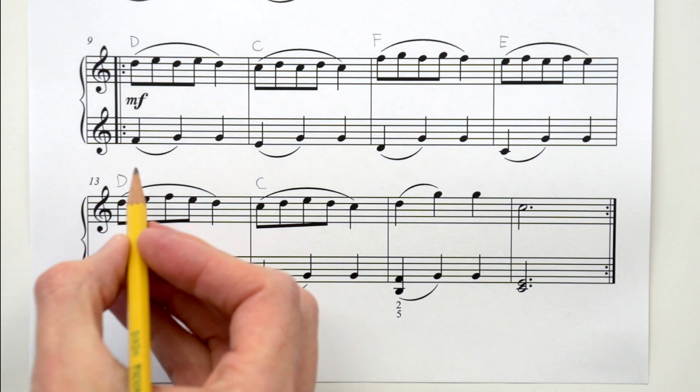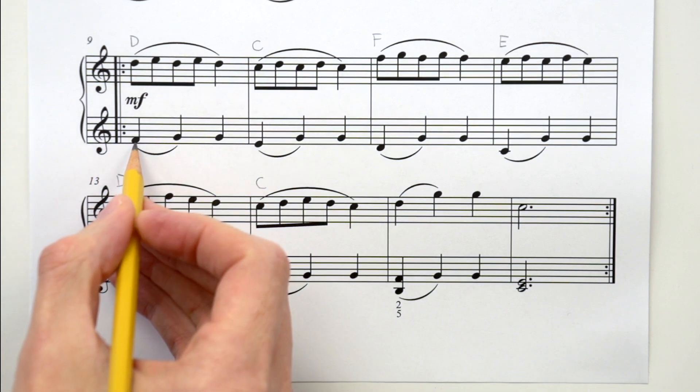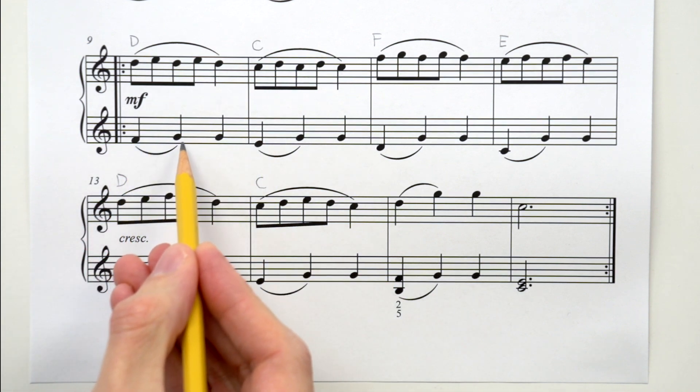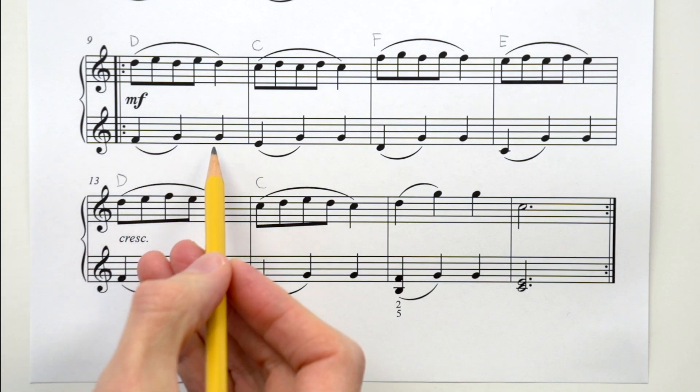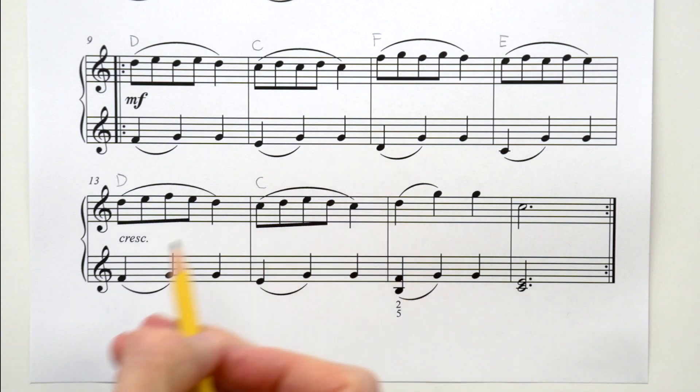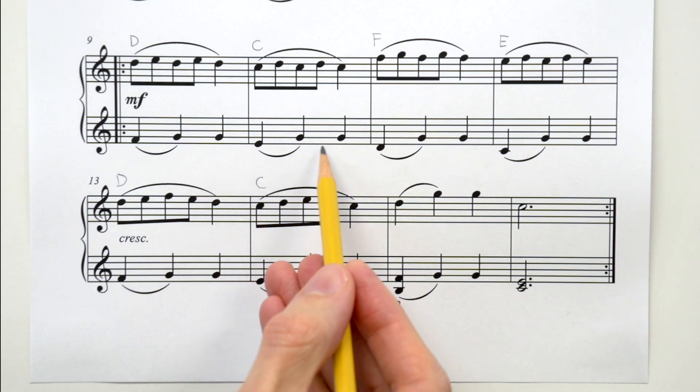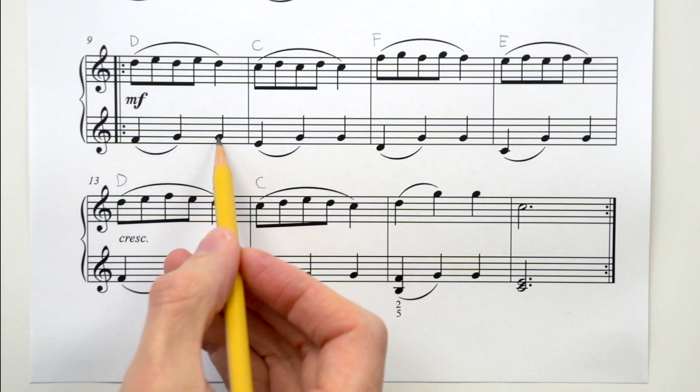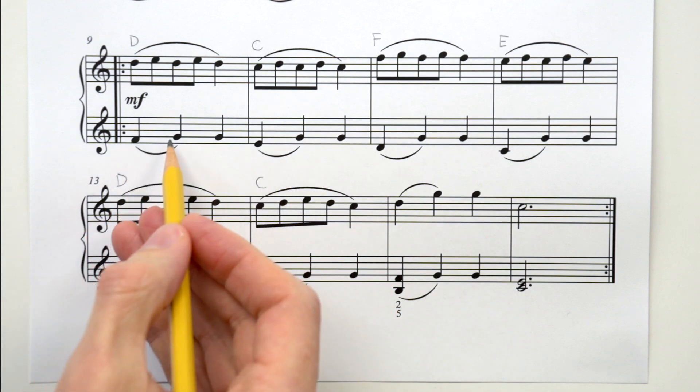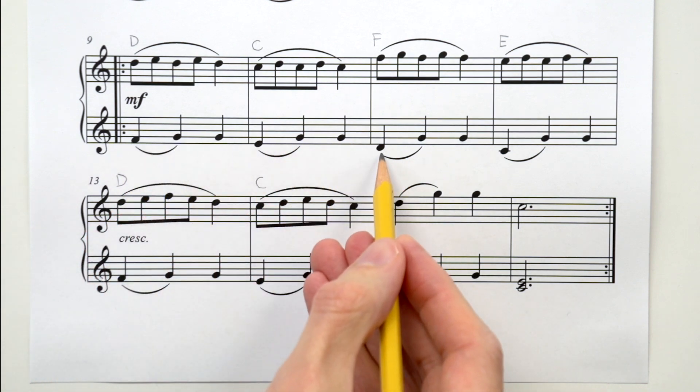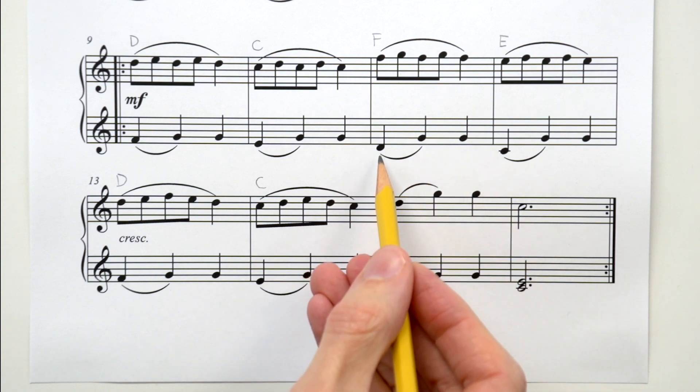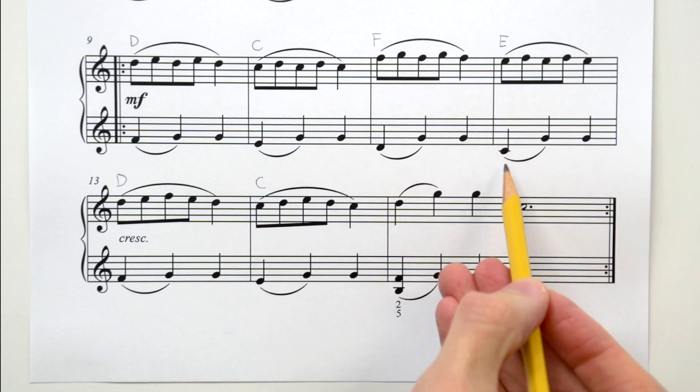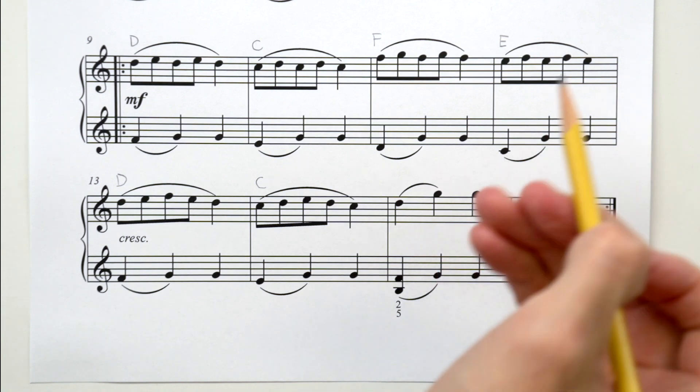All right, time to check out line three. Here's our treble clef again. Can you tell me the letter names for these first three notes? Say them out loud for me. If you said F, G, G, you're correct. Now, can you tell me these next three notes? If you said E, G, G, you're correct. Once again we have these repeating Gs on beats two and three. So we had F, G, G, then E, G, G. Then, can you tell me these next three? If you said C, G, G, you're correct.